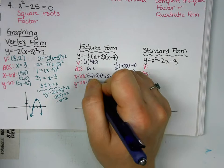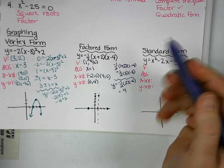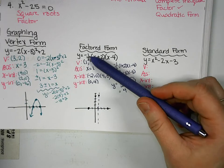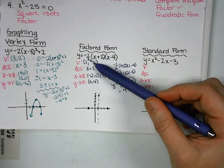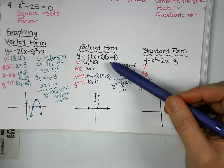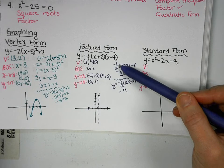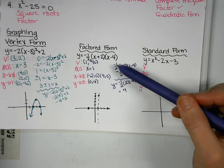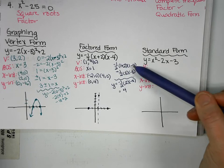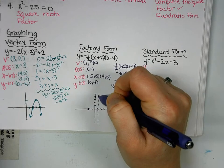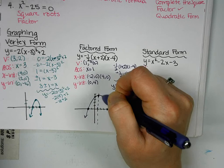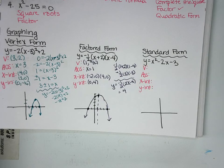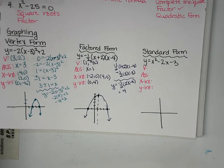So 0, 4. So it's going to look something like this when we connect all of our dots. So on the back side you have 2 vertex, 2 factored, and you also have 2 standard. Now we haven't done a whole lot of graphing with standard. We usually look to change it to factored or vertex. But you technically don't have to.